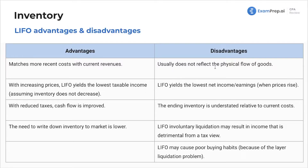Disadvantages: LIFO usually does not reflect the physical flow of goods. That's probably the biggest disadvantage — last in first out, when it's usually first in first out. What you get in first gets sold first. Also, LIFO yields the lowest net income or earnings.